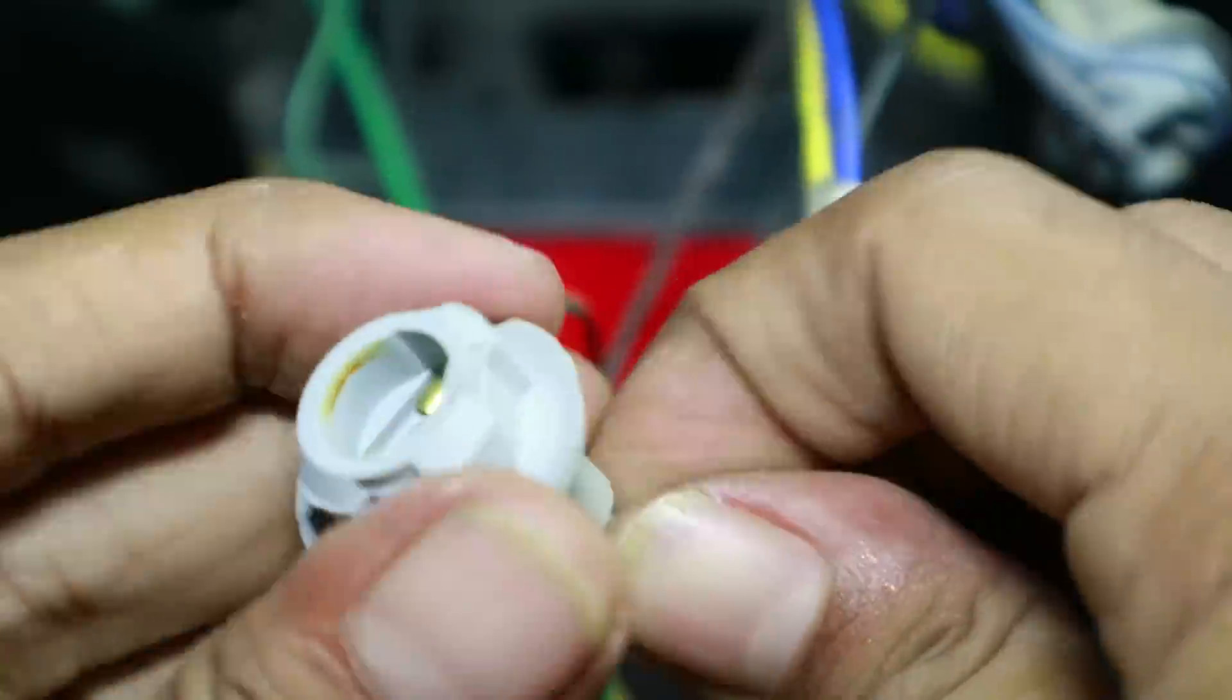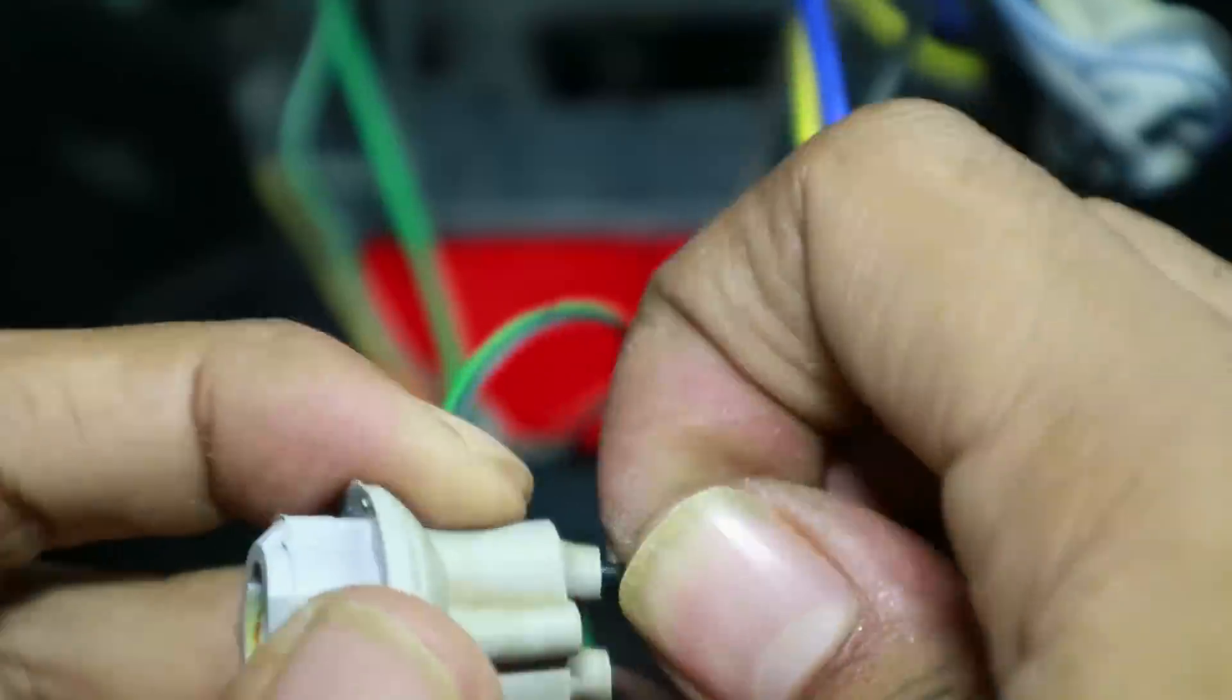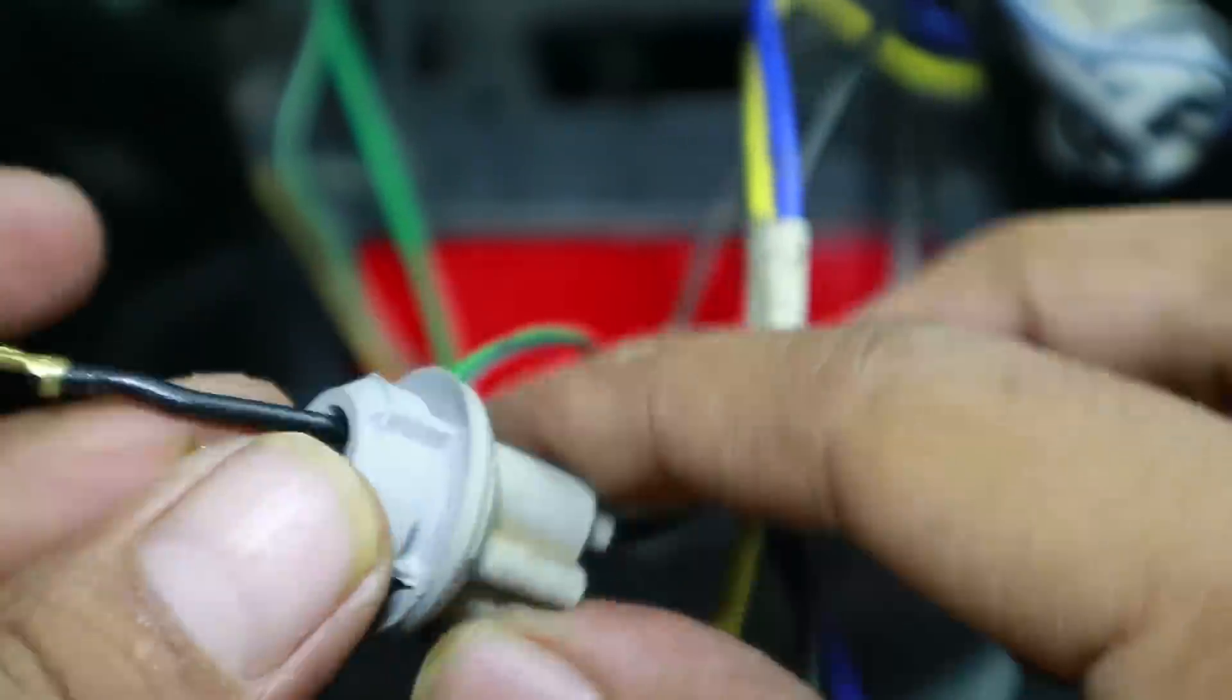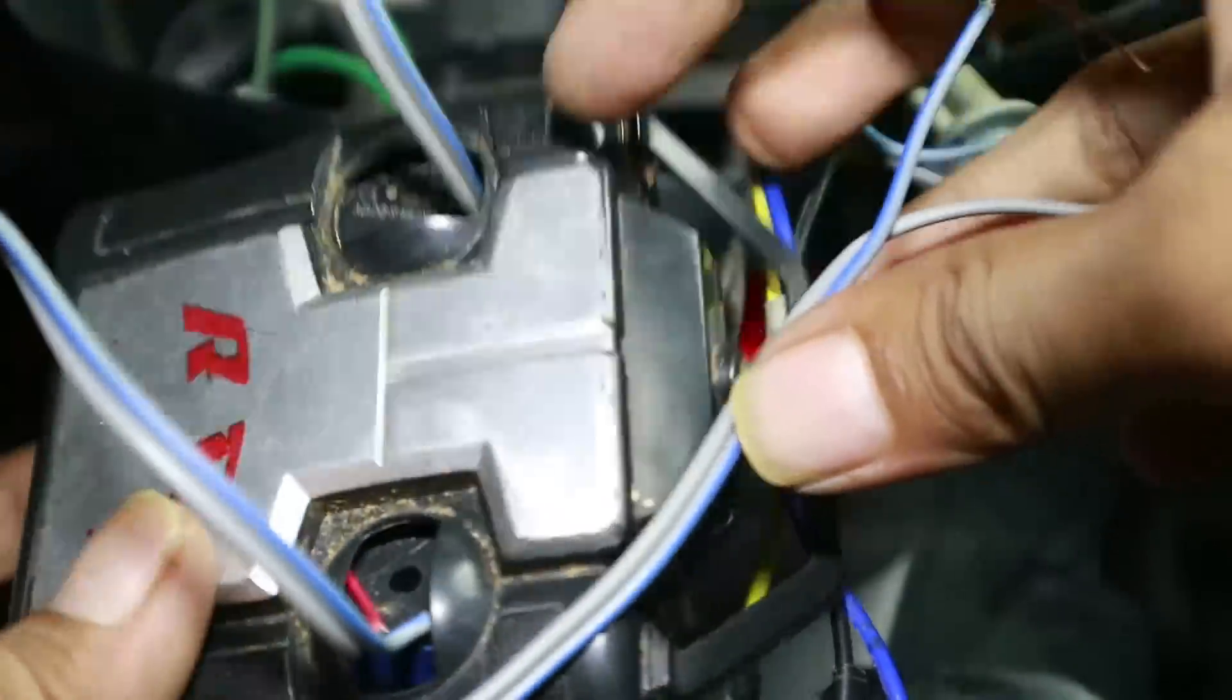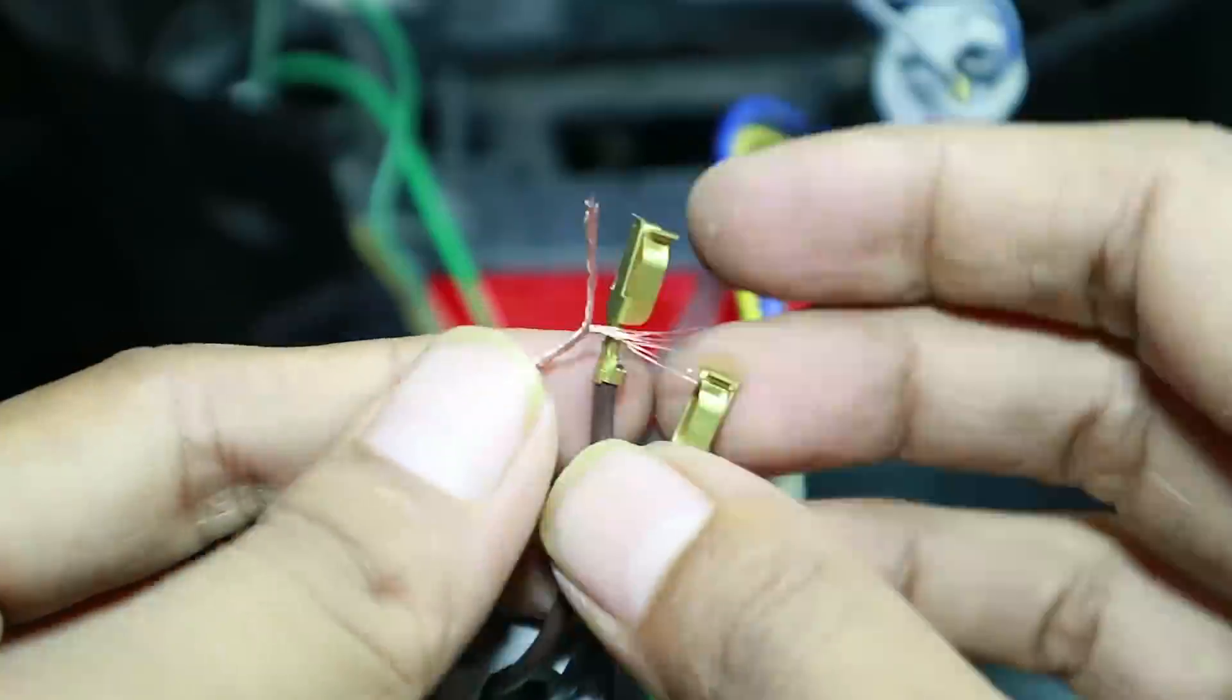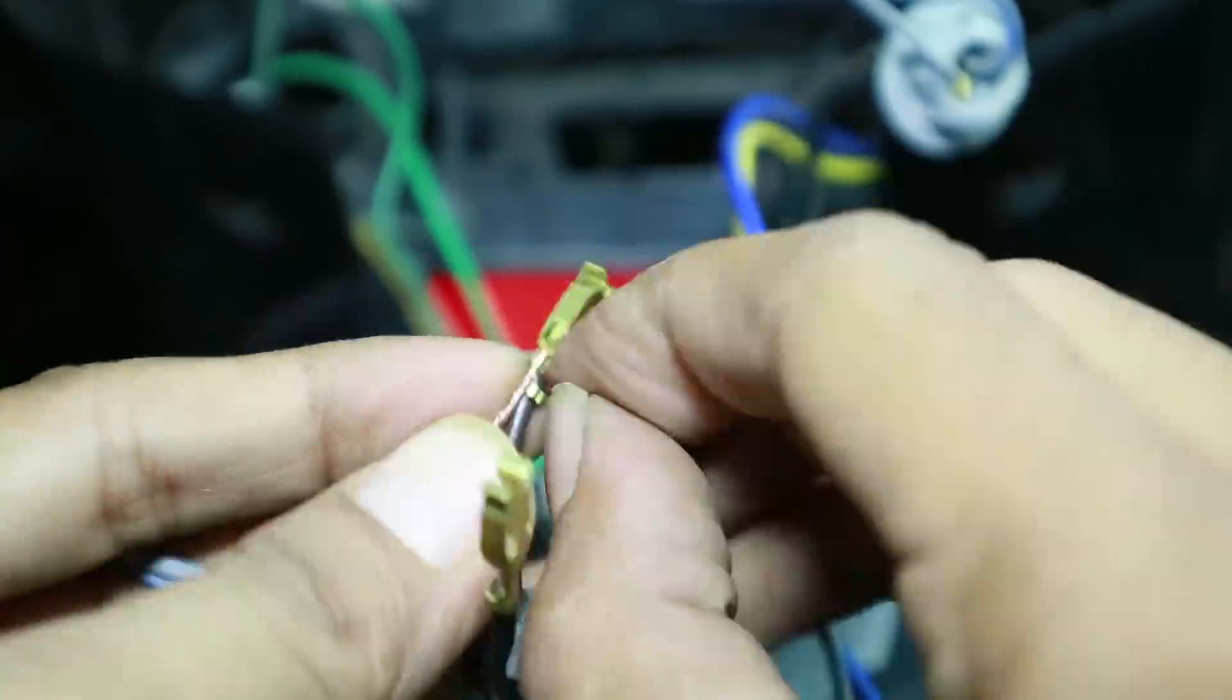Sebenarnya ini bisa langsung dikupas aja. Kalau anak tapi ini eman-eman ya. Sebenarnya langsung bisa dikupas. Ini kabel yang tadi dari relay yang tadi ya. Kita sambungkan aja ke sen bagian kanan atau kiri.